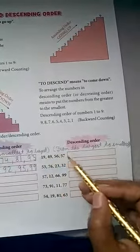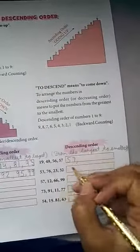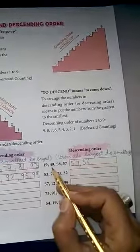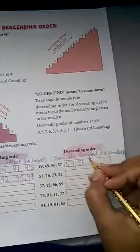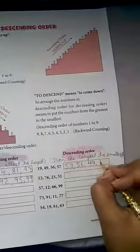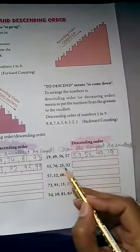Numbers: 53, 76, 23, 32. Which is the largest number? 23... sorry, which is the smallest number. Which is the largest number? 76.